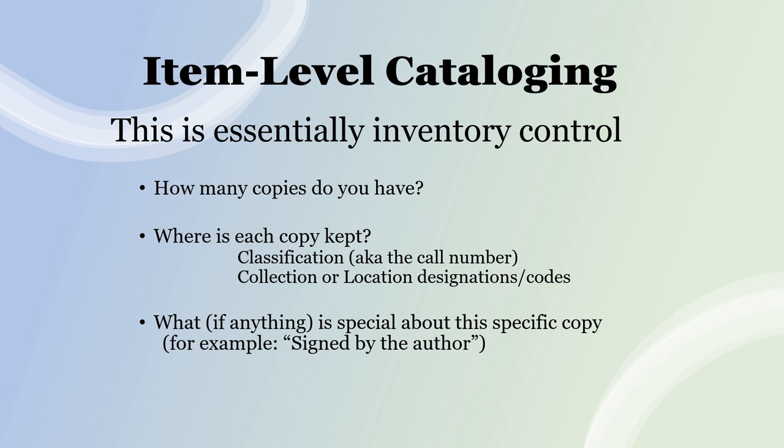Item level cataloging is essentially inventory control. It's how a library knows what it actually has in its collection. How many copies are there? Where is each copy kept? Your call number is part of item level cataloging. The collection or location designation — this is part of the children's collection, this is part of the New Hampshire collection — those kinds of things are item level information. What, if anything, is special about a specific copy, for example, is it signed by the author? All of those pieces make up item level cataloging.